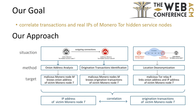We utilize onion address analysis and origination transaction identification methods to correlate onion addresses of Monero Tor hidden service nodes with their origination transactions. By sending a signal watermark embedded with the onion address to the Tor circuit, we establish a correlation between the onion address and the IP address of a Monero Tor hidden service node. Ultimately, we correlate transactions and IPs of Monero Tor hidden service nodes.